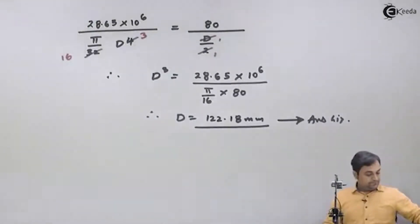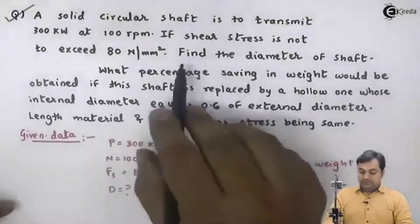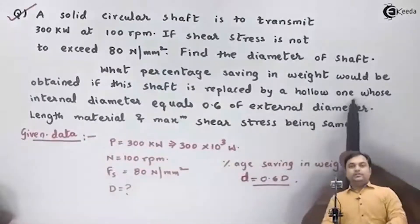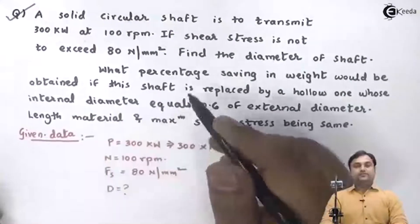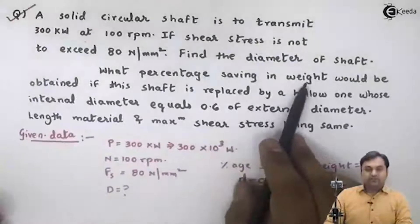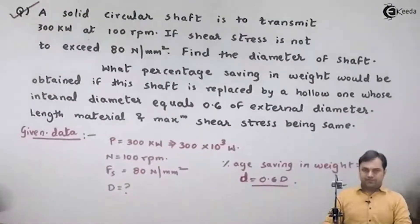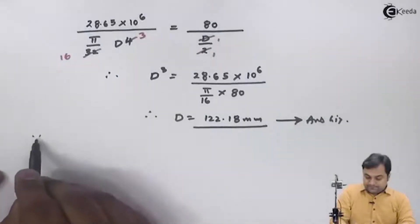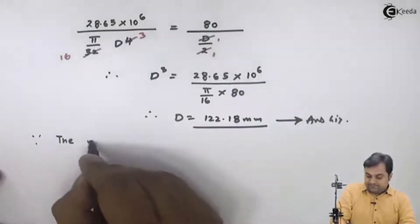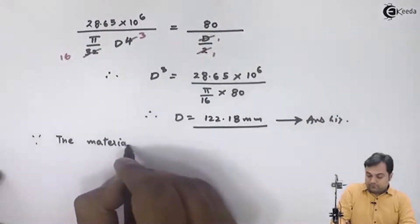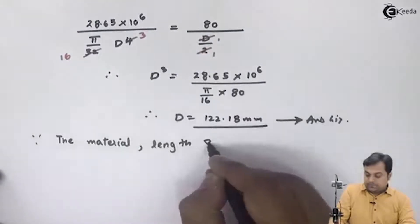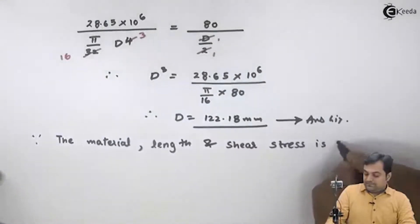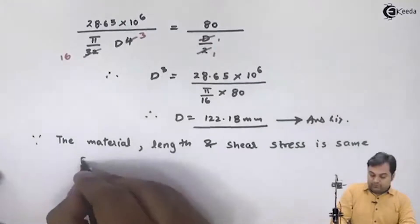The next part of the question: what percentage saving in weight would be obtained if this shaft is replaced by a hollow one? We have calculated the diameter of the solid shaft; now we have to show how much the percentage saving in weight would be if the hollow shaft is used. Since the material, length, and shear stress are the same for both solid and hollow shaft...